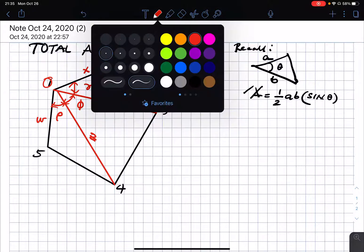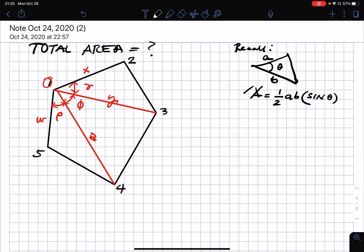By expression, we will say that the total area will be area one plus area two plus area three.